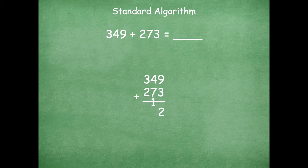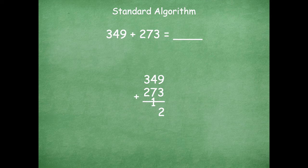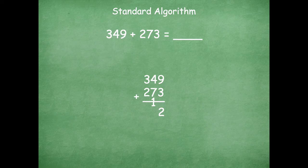And now I can head over to my tens place and four tens plus seven tens plus one more ten that's hanging out there gives me a total of 12. So I can rename 12 tens as 100, two tens. Now I move to my hundreds place which is 300 plus 200 plus 100 gives me a total of 600.